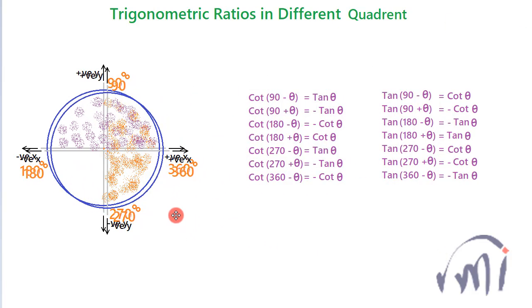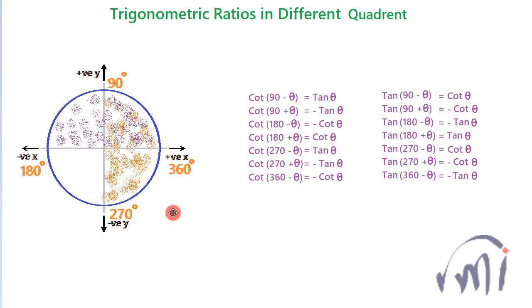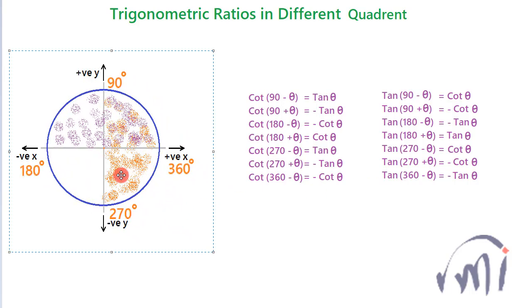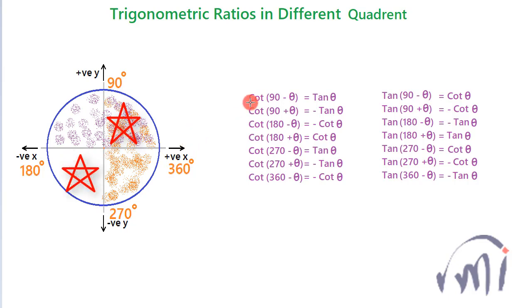If I overlap this diagram, which was the positive area for sine, with the last diagram, which was showing the positive area for cos, then these intersection areas here and here—in these two areas, if the angle is there, the value of cot and tan will be positive because in this area both sine and cos are positive, and in this area both sine and cos are negative.